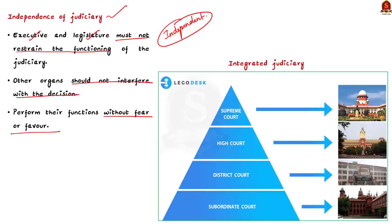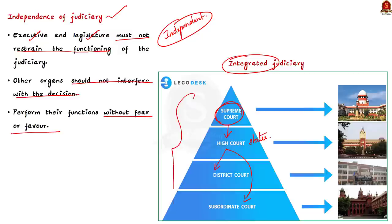Now let us see what it means to have integrated judiciary. The Supreme Court stands at the top of the integrated judicial system in India. Below it, there are High Courts at the state level. Under a High Court, there is a hierarchy of lower courts — district courts and subordinate courts. The single system of courts enforces both the central law as well as the state law, unlike in the USA where federal laws are enforced by the federal judiciary and state laws are enforced by the state judiciary.